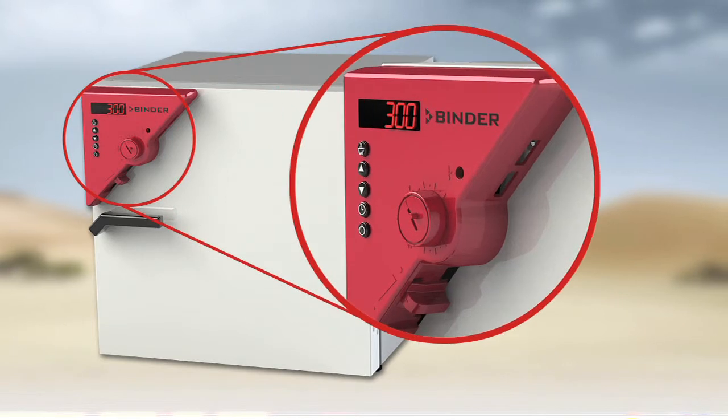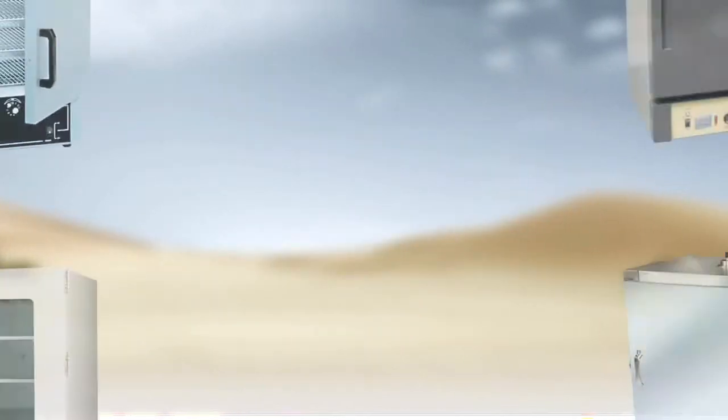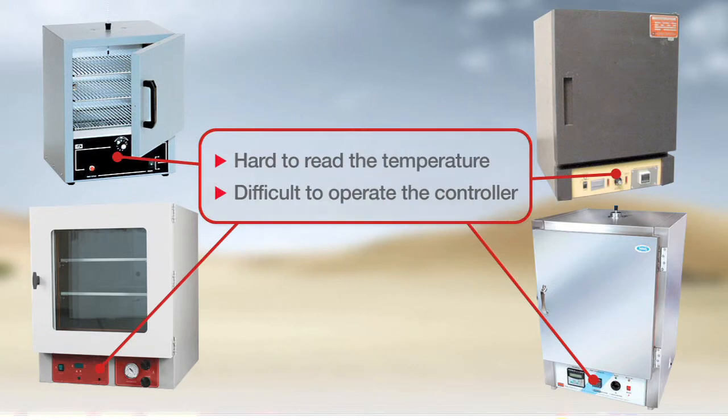Next, Binder Ovens feature an ergonomically placed PID temperature controller. Competing Ovens place their controller at the base of the oven, making the temperature harder to read and making it more difficult for you to operate the controller to make adjustments.